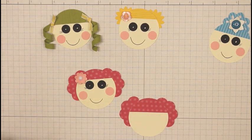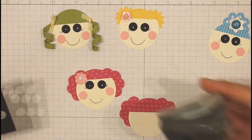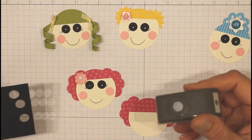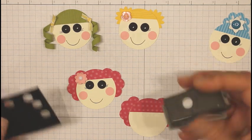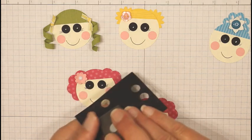Now for the eyes. I've got basic black cardstock and I believe this punch measures three-eighths inch and it's from the Itty Bitty Shapes punch pack. I need two of those.